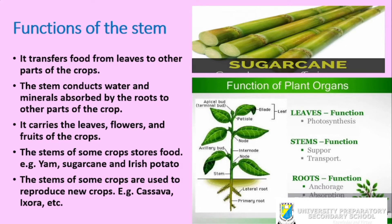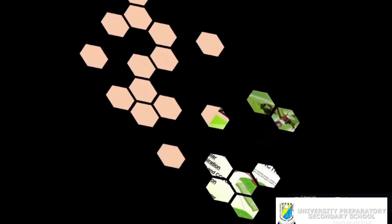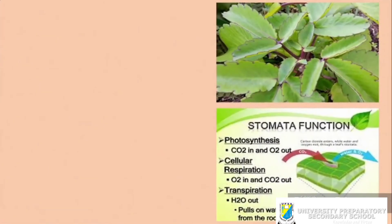To summarize: the leaves are used for photosynthesis, the stem is used for support and transport, and the roots are used for anchorage, absorption, storage, and conduction of water and minerals.